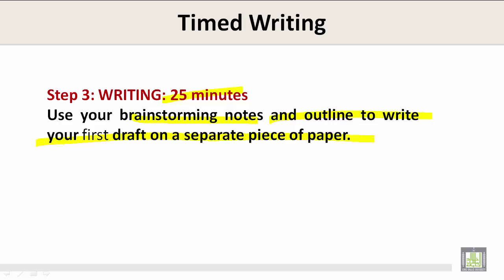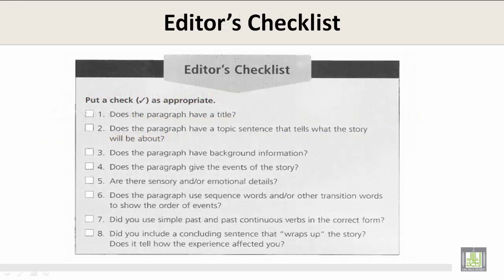I wish you good luck. And before we finish Unit 6, let's take a look at the Editor's Checklist. Put a check as appropriate. Does the paragraph have a title? Does it have a topic sentence that tells what the story will be about? Does it have background information? Does it give the events of the story? Are there sensory and/or emotional details? Does the paragraph use sequence words and/or other transition words to show the order of events?